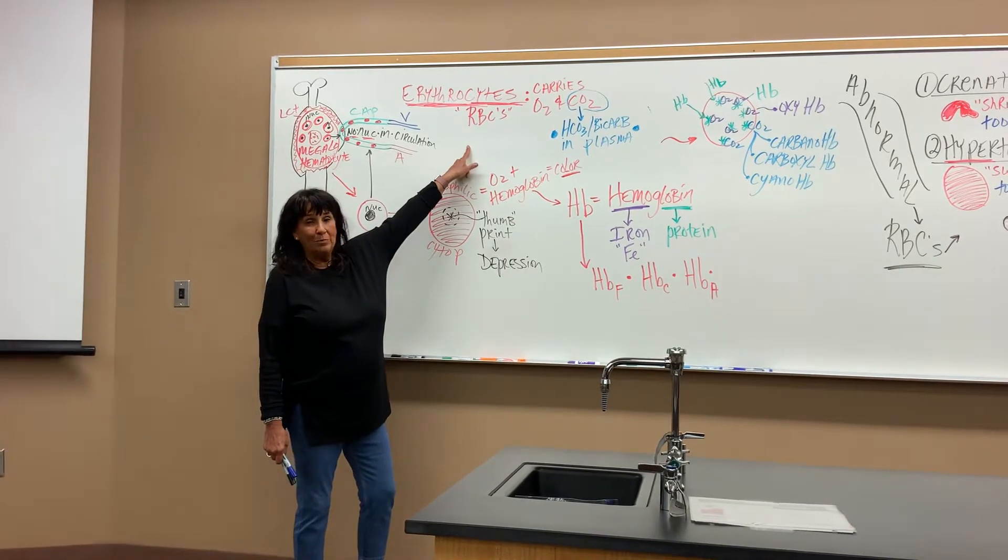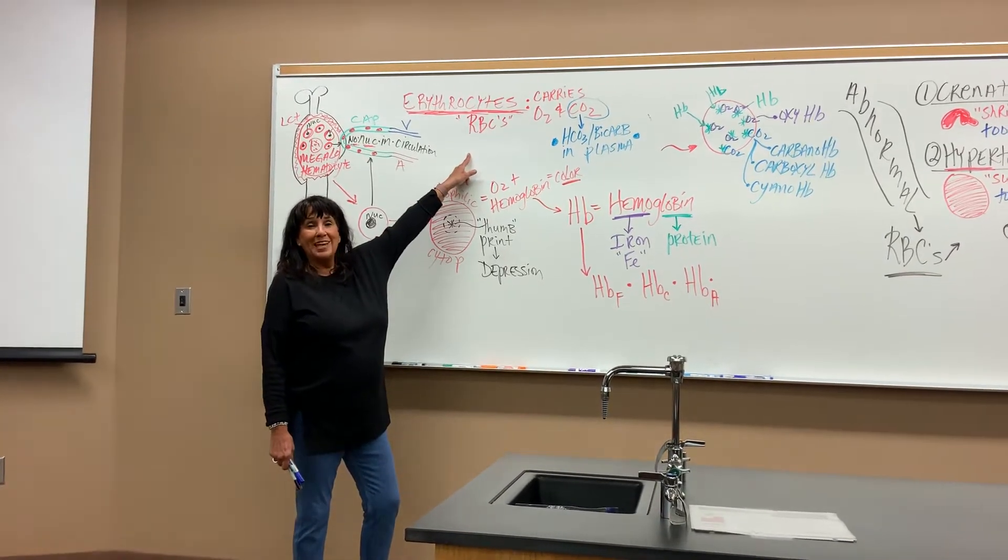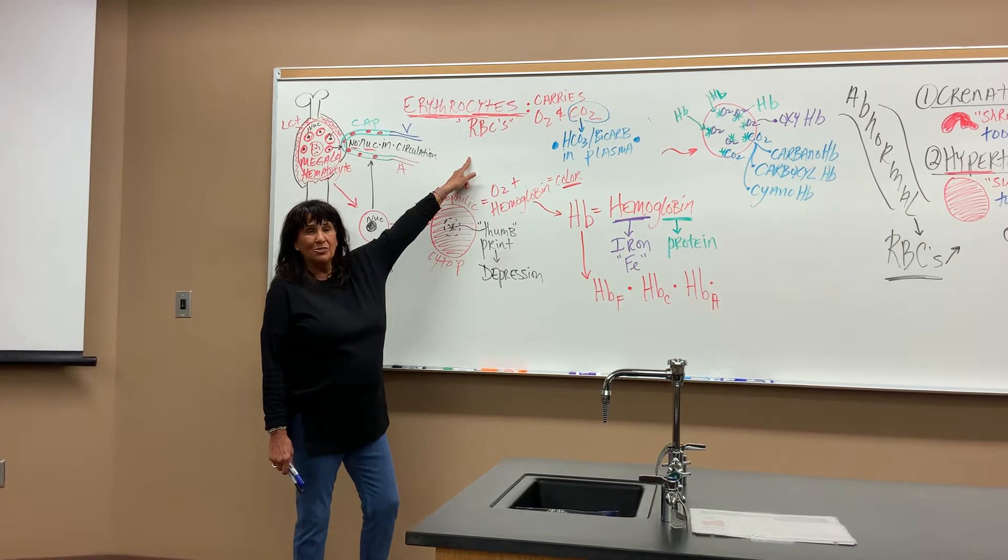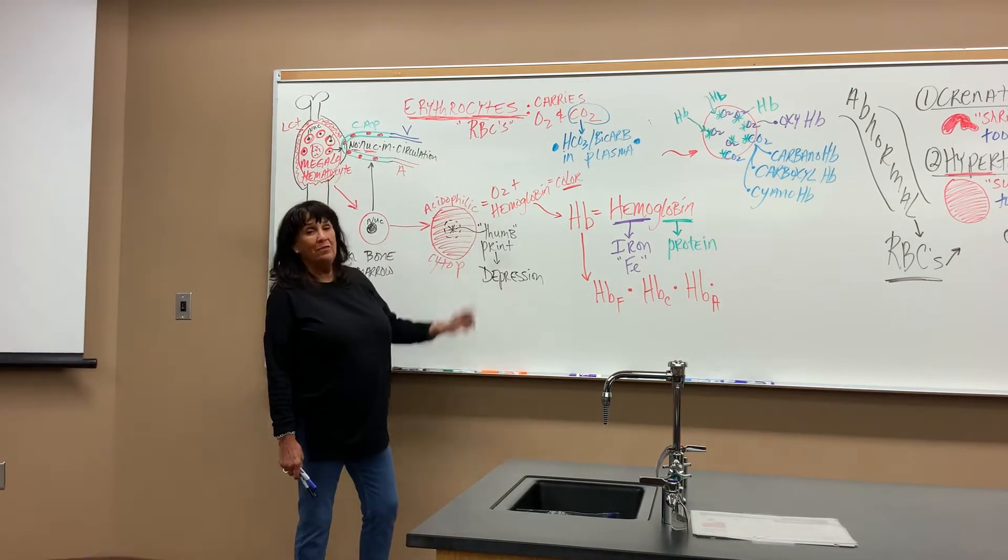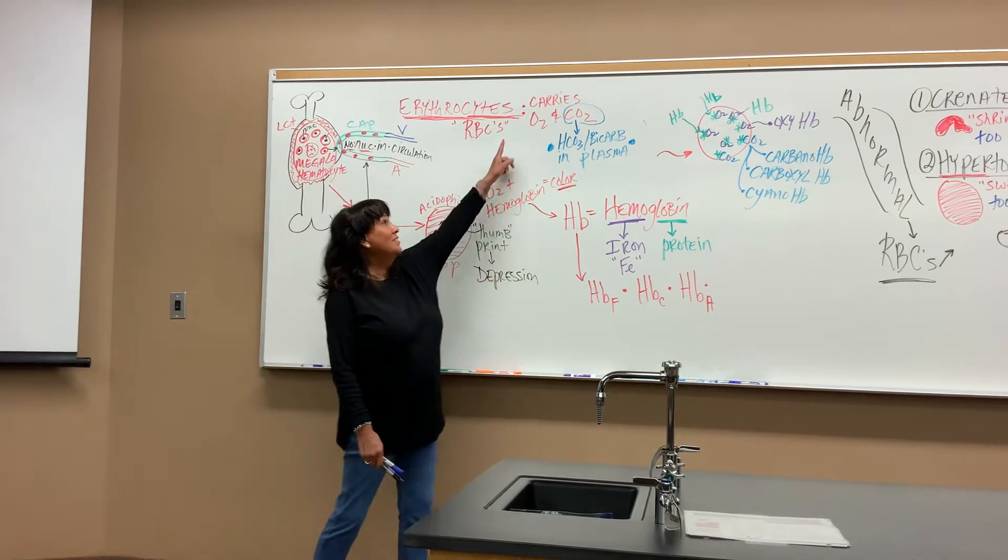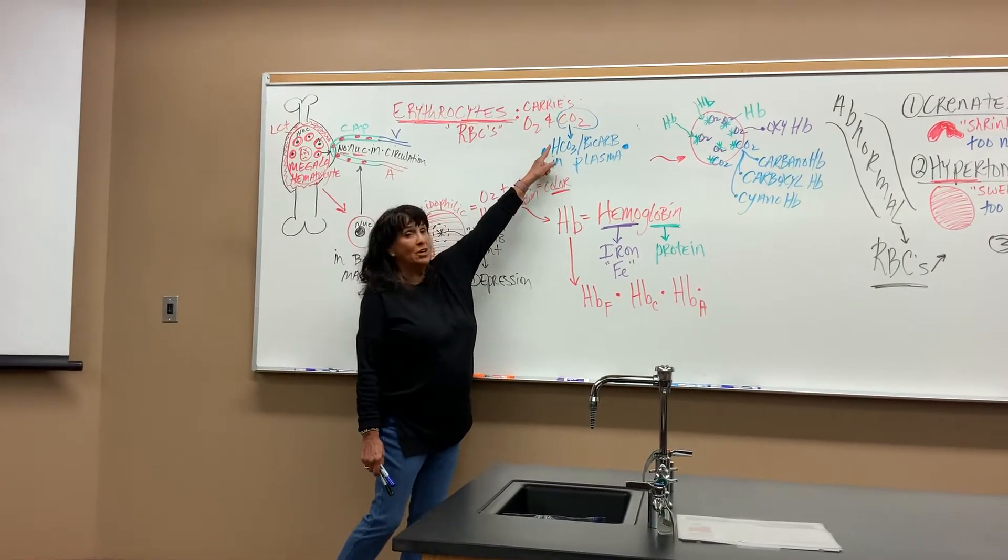Why are they called red blood cells? Because they stain pink color to slightly red, but I'd say more of a pinkish color. They have only one function, the erythrocytes, and that's to carry oxygen and CO2.